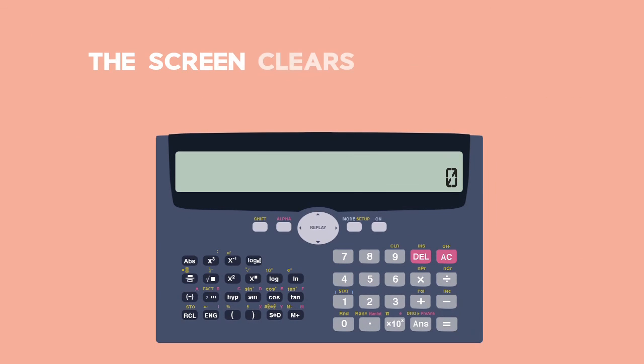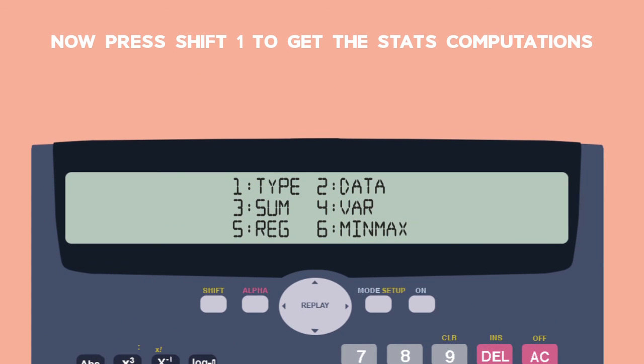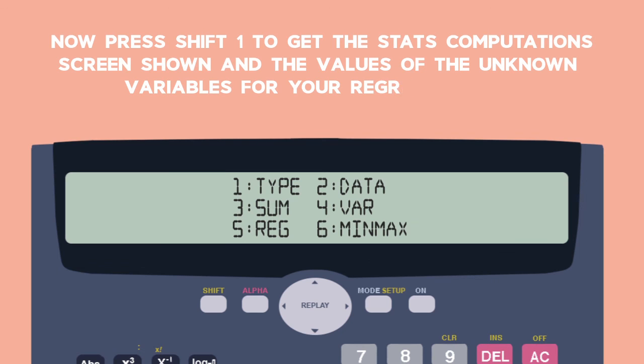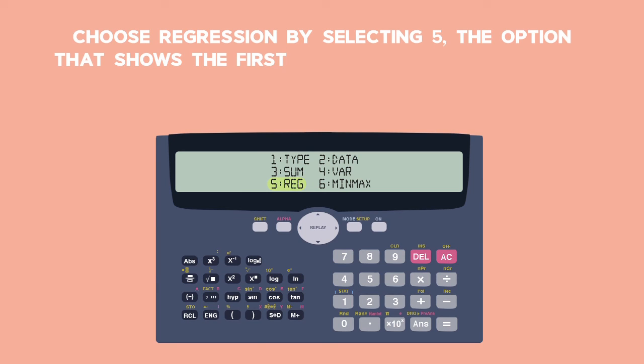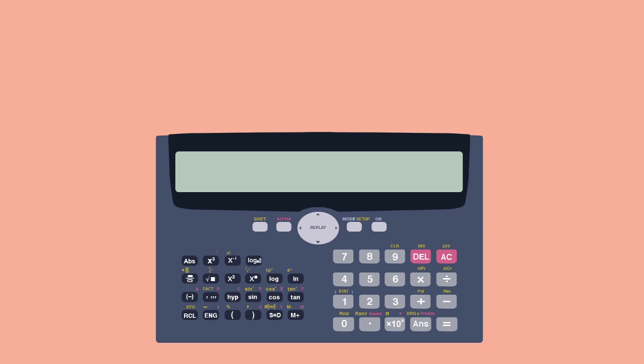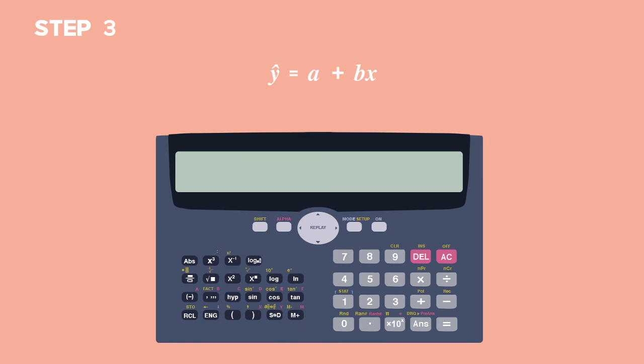The screen clears but the data remains stored. Now press Shift 1 to get the Stats Computations screen shown and the values of the unknown variables for your regression line. Choose Regression by selecting 5, the option that shows the first three letters of the word regression. Step 3. Getting regression values from the calculator. Select option 1 and then equals to get the value of the Y intercept.